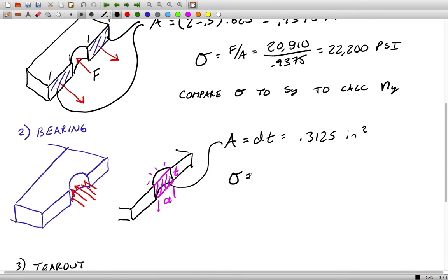This is a normal stress once again, it's an F over A calculation, but in this case the stress is compressive, so we're going to tag on the minus sign here. Out of this we get negative 66,590 psi.